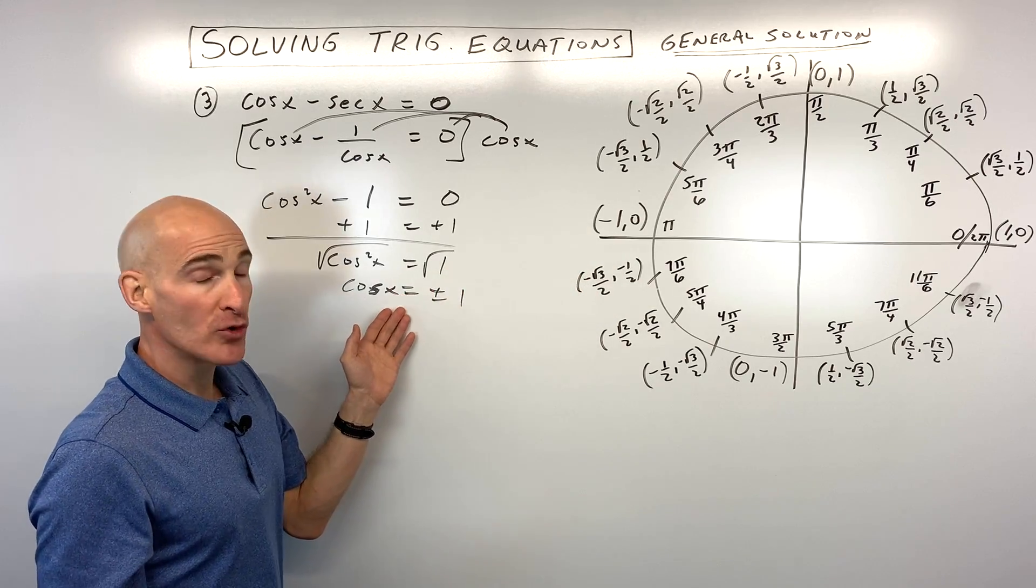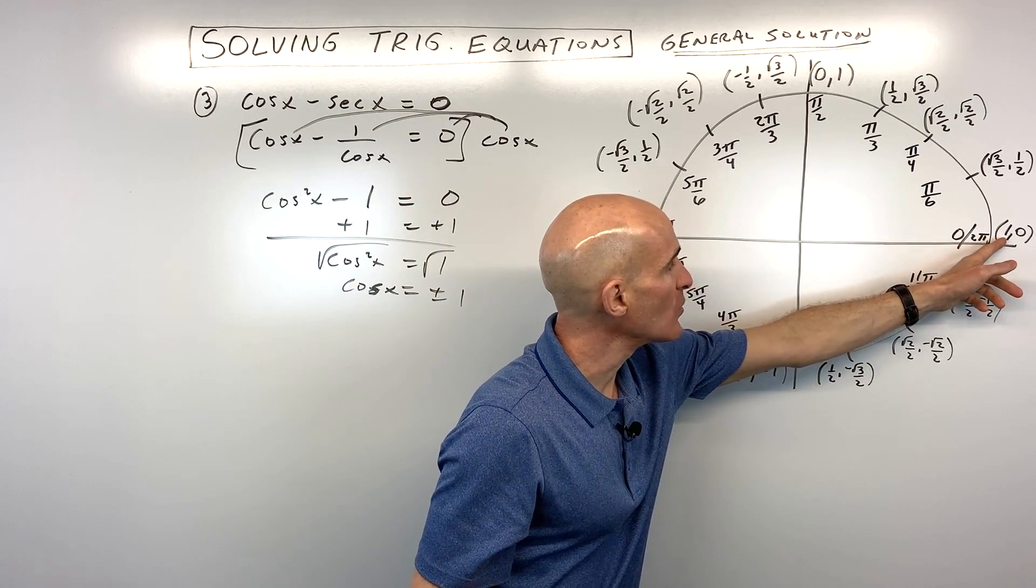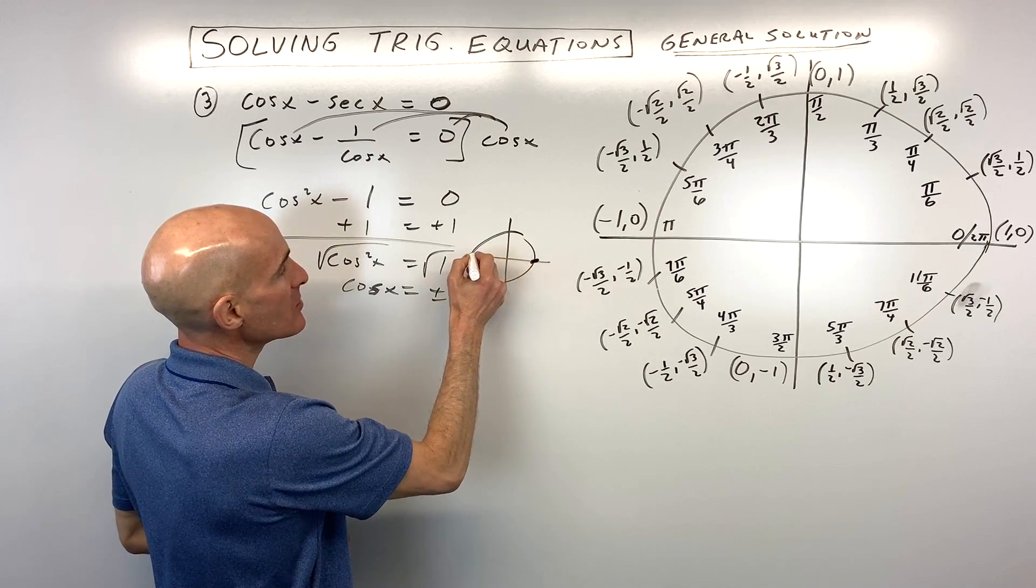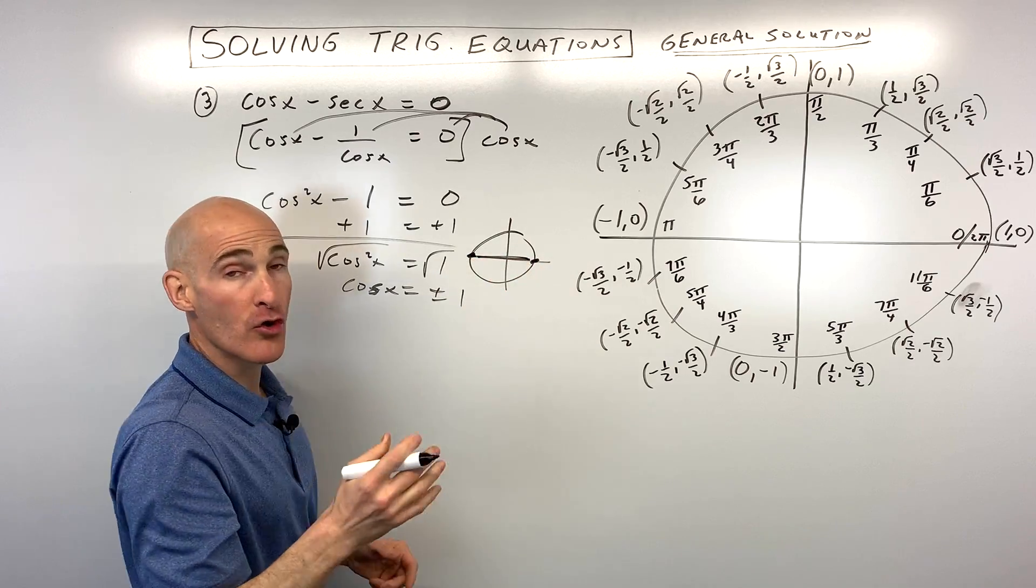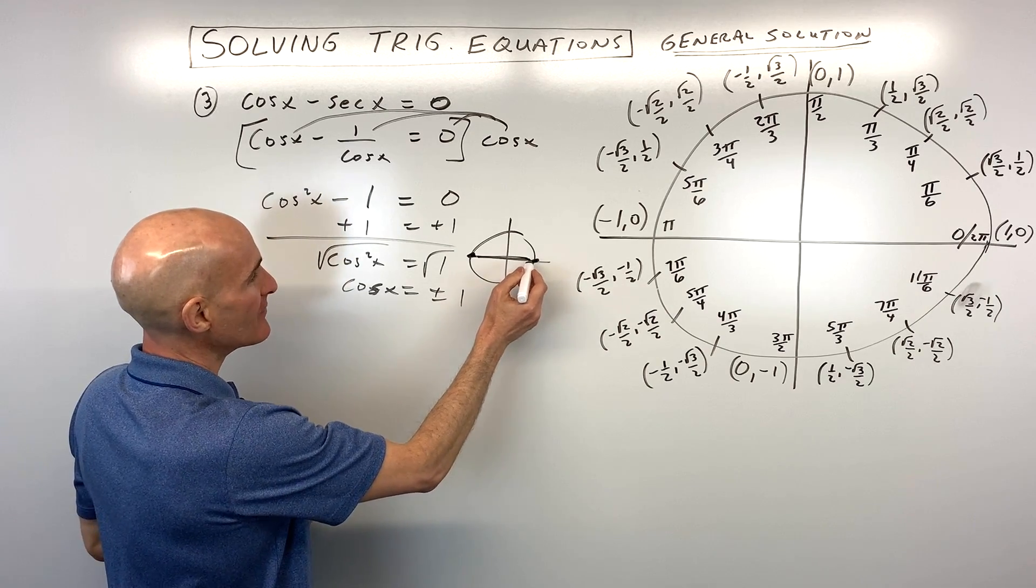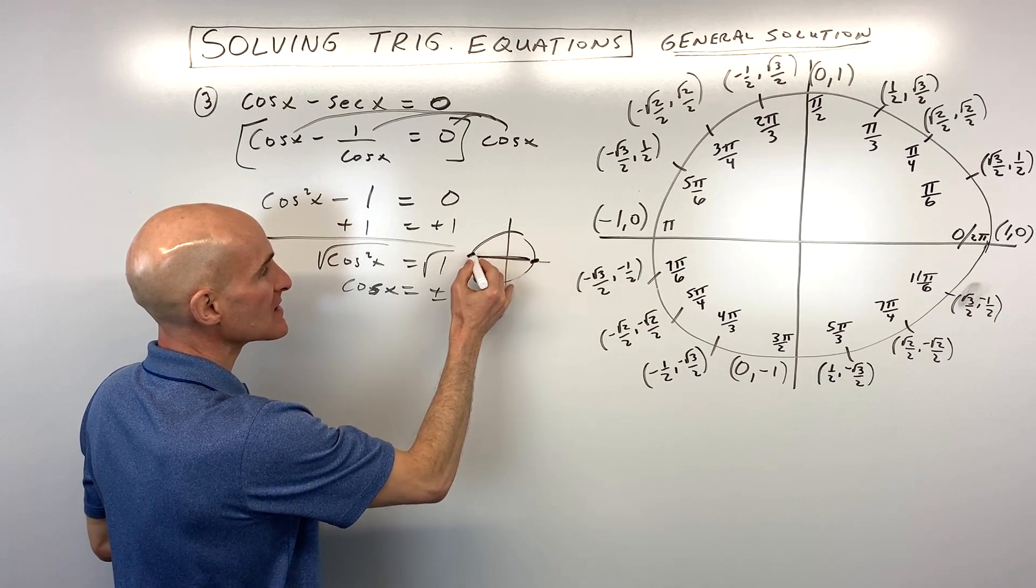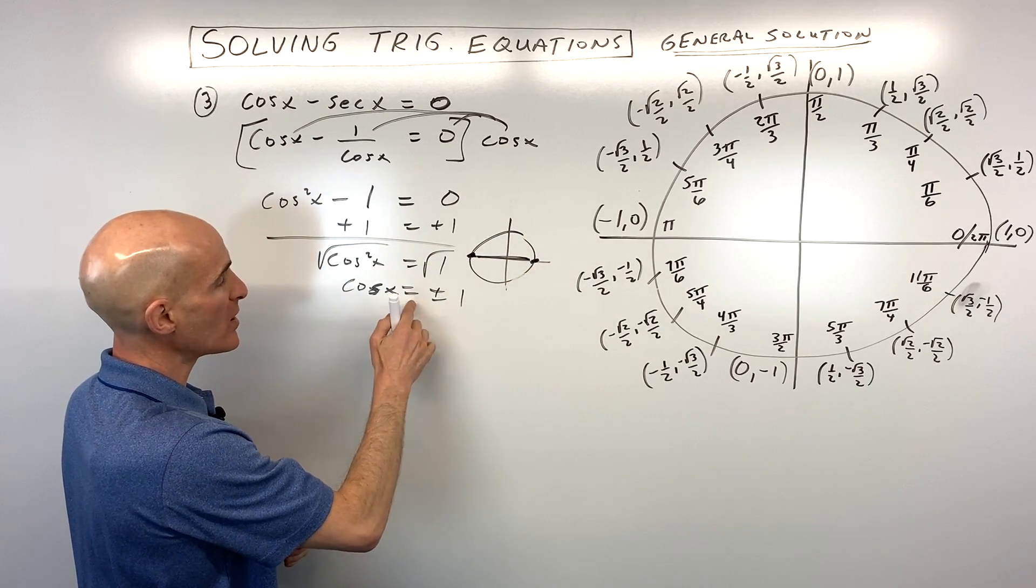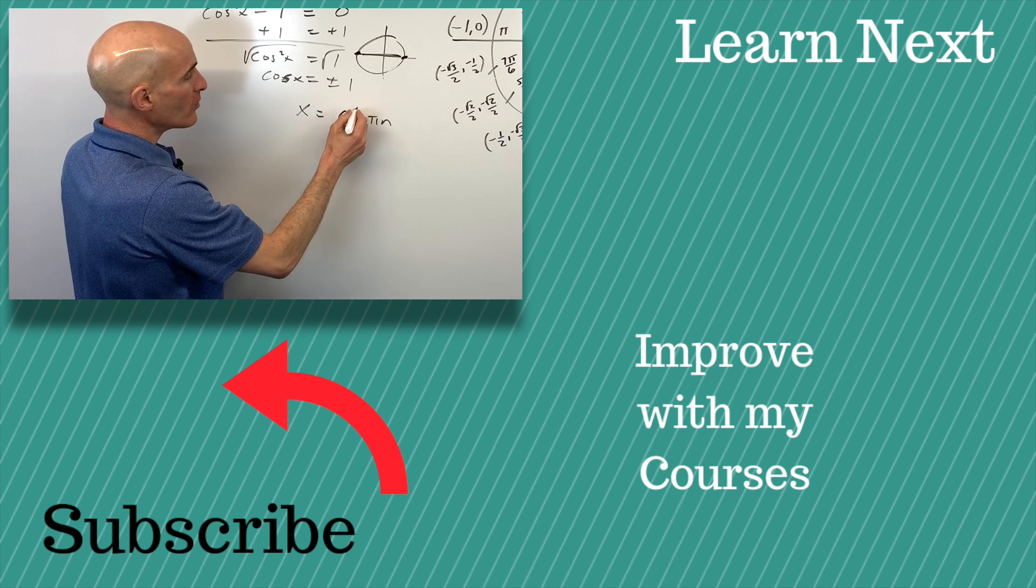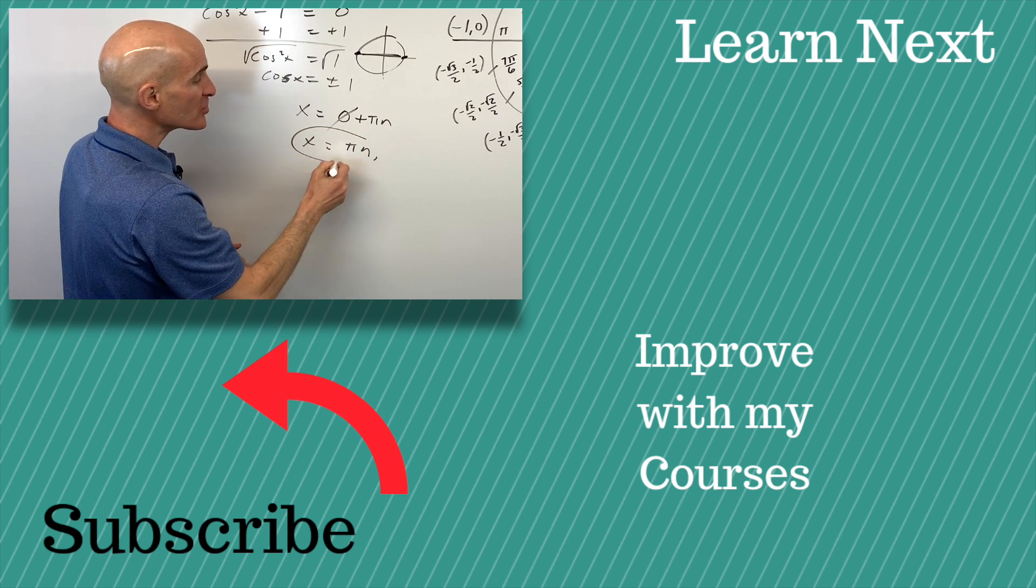So now we go to the unit circle. Remember, cosine is the x-coordinate on the unit circle. And we say, well, where is the x-coordinate 1 or negative 1? So it's going to be 1 here, and it's going to be negative 1 here. And those are the only two locations. So just to draw a quick sketch, it's going to be here and here. And again, notice that they're across from each other like a diagonal diameter is what I'm trying to say there. So what we have is we actually have 0 plus, we keep adding pi to get to this point and another pi to get to this point. So if we keep going halfway around that circle, we're going to end up at one of these points where cosine is positive or negative 1. So you can see that x equals 0 plus pi n. Or, since 0 is really nothing, we could just say x equals pi n, where n is an integer. And this would be our general solution.